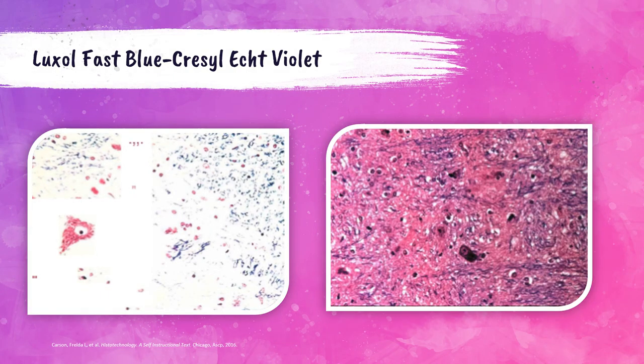A photo shows tissue stained with the Luxol Fast Blue Cresyl Echt Violet method — Nissl substance and nuclei are violet and myelin is blue. If properly differentiated, the neuron cell body will be colorless before counterstain, allowing Nissl substance to appear rose-violet. A second photo demonstrates what happens when the Cresyl Violet solution is not acidified with acetic acid: the background stains diffusely and cell nuclei and Nissl substance are not visible.